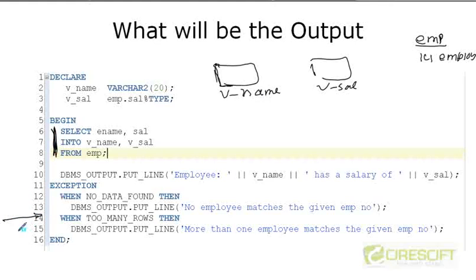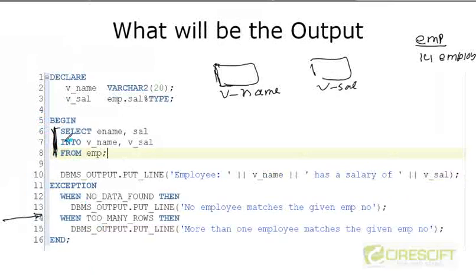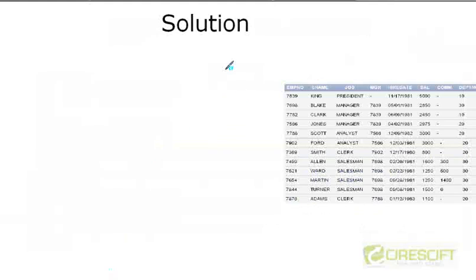This failure will go to the exception handling at line number 14, which we will discuss later. But now, if my query is going to fetch multiple rows, how do we solve that? There is a solution, so let's discuss it.